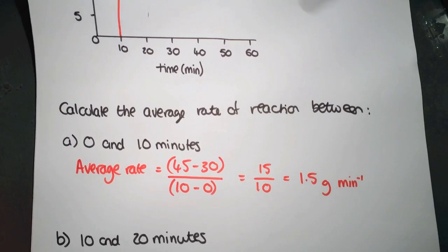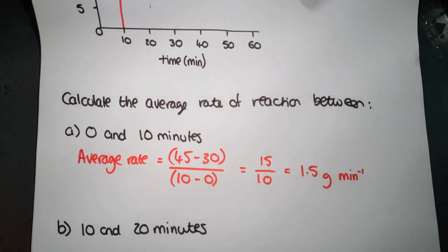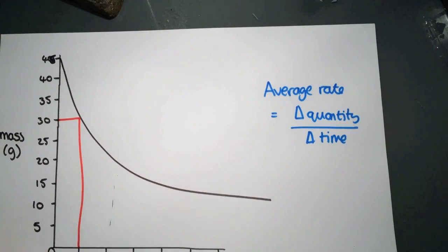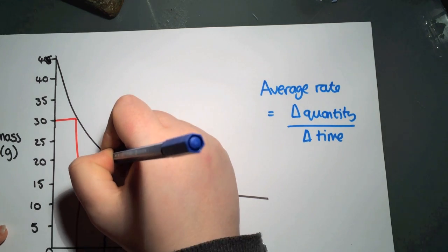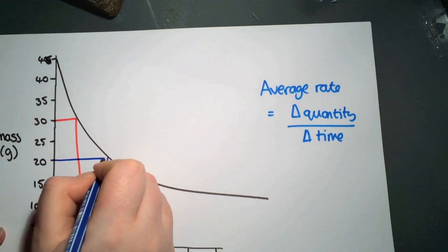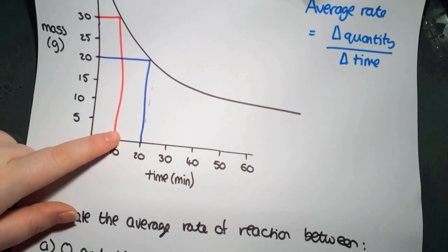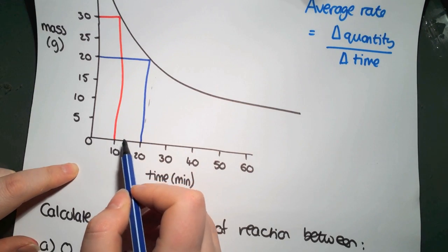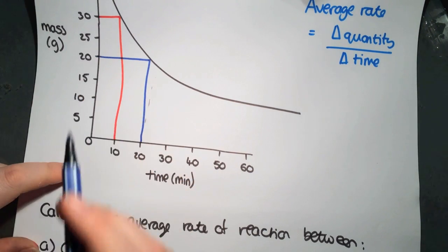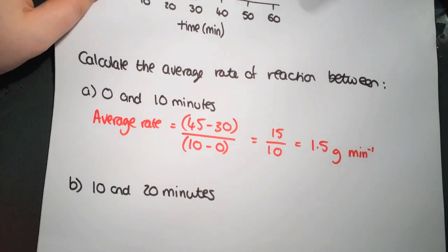The final example here is again looking at a time period which does not start at 0. So we're looking between 10 and 20 minutes. So we need to go back and put in another line at the 20 minute point. So trace up our line from 20 until it hits the graph. And then trace across to the mass. So you can see now we are working out this area between the 10 and the 20. So we've got 30 and we've got 20 as our two values for mass. So that's our quantity.